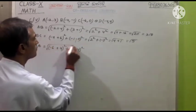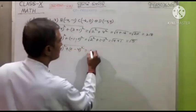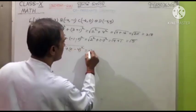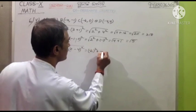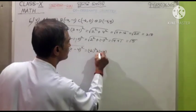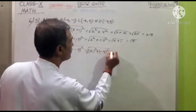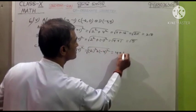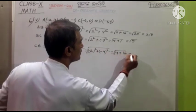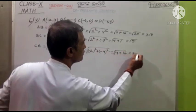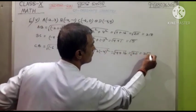Minus 4 square, the root over is equal to... Now minus 2 square plus minus 4 square. The whole root over is equal to 4 plus 16. The root over is equal to 20. The root over is equal to 2 root 5.